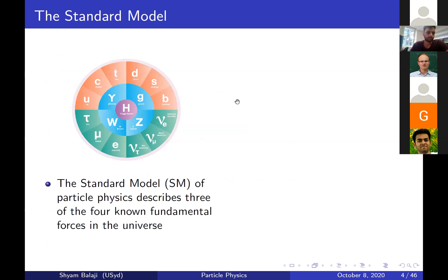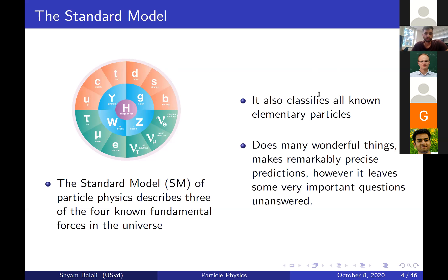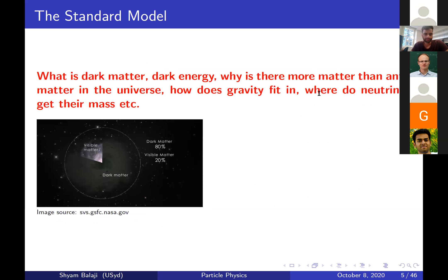The Standard Model of particle physics describes three of the four known fundamental forces in nature: the weak force, which governs radioactive decay and processes in the sun; electromagnetism, mediated by the photon; and the strong nuclear force, responsible for binding nuclei together via the gluon. It does a very nice job of classifying all known elementary particles and makes remarkably precise predictions. However, it leaves some very important questions unanswered.